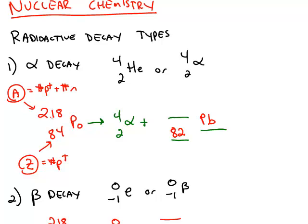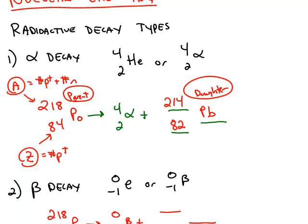The mass number 218 also has to be conserved. So 218 is equal to 4 plus 214. So if a polonium atom underwent this type of radioactive change, it would turn into an atom of lead 214. The original is called the parent, and what it turns into is called the daughter. So that's one type of radioactive decay.